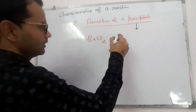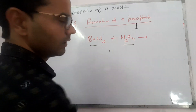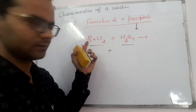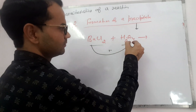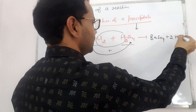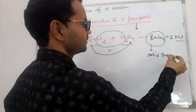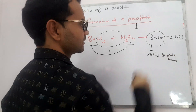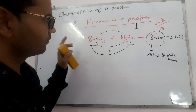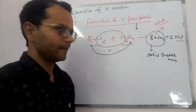Another example: when barium chloride is dissolved in sulphuric acid, a double displacement reaction takes place. As a result, barium sulfate and HCl are formed. Barium sulfate is a solid insoluble mass and its color is white — a white precipitate. This is the second characteristic of a chemical reaction: when a precipitate is formed during a reaction.